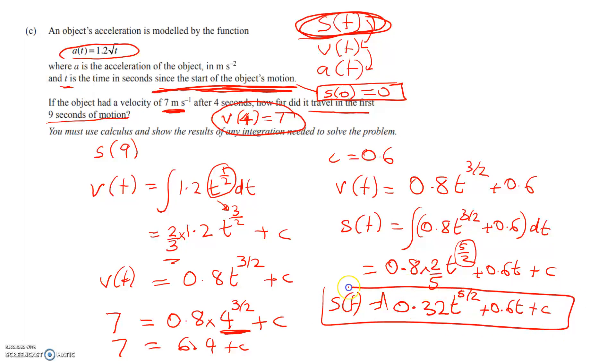So now we have to find the plus c in there, the constant. But we know here that s of 0 is equal to 0. So I'm going to use a new slide to keep going on this, even though we nearly finished it. So this is what we had from the integration: 0.32 t to the 5 over 2 plus 0.6 t plus c. But we know that 0 is equal to 0 plus 0 plus c. So c is equal to 0. So s of t is simply this.